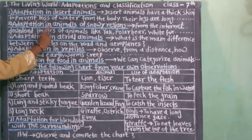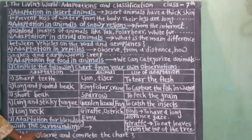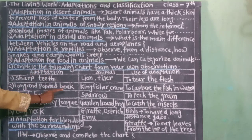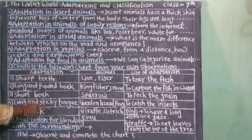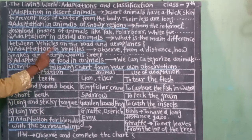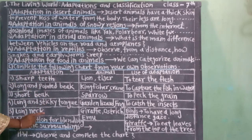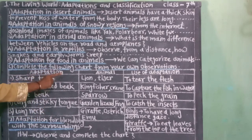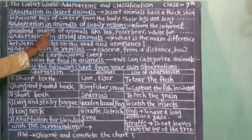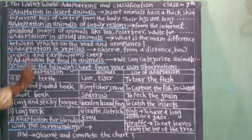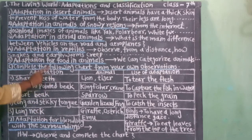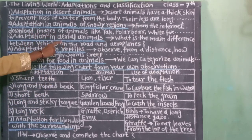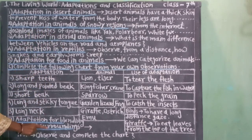The body of insects is also light in weight and tapers at both ends. They can fly with two pairs of wings and also walk with six stick-like legs.